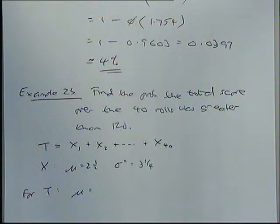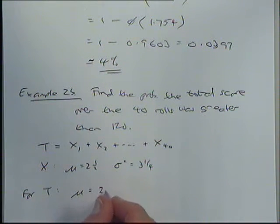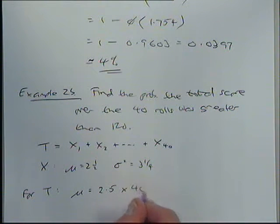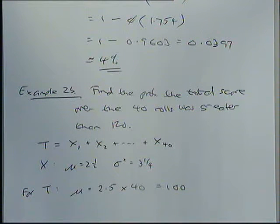100, where does that come from? Yeah, it is, just the 2.5 here, 2.5 times by 40. Okay, the total will be 40 times what the mean would be each time, that's correct.